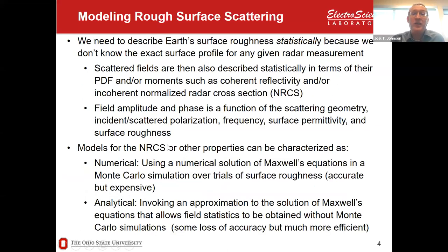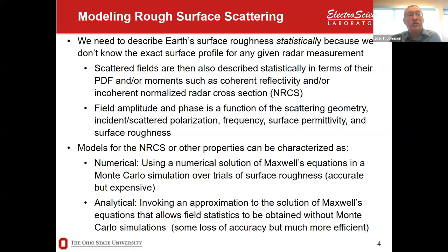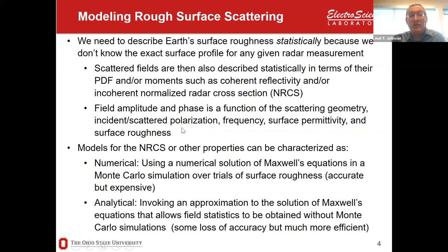When we talk about scattering from Earth's surface, we don't know the detailed properties of the surface roughness — we don't know exactly what the terrain profile is of the sea, ocean, or land surface. So we describe surface roughness statistically, modeling it as a stochastic process. Since we have a statistical surface, the scattered fields must also be described statistically — they're random variables. We can talk about their moments like the mean RCS, the normalized RCS, or the coherent reflectivity. These moments depend on scattering geometry, polarization, frequency, permittivity, surface roughness, and more.